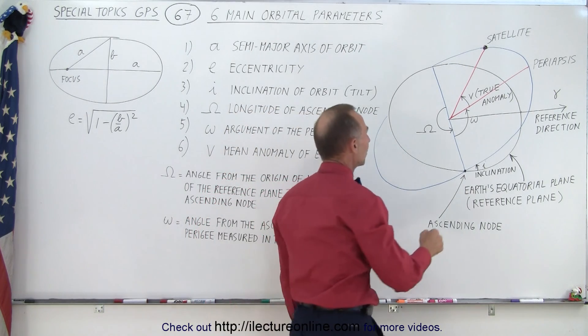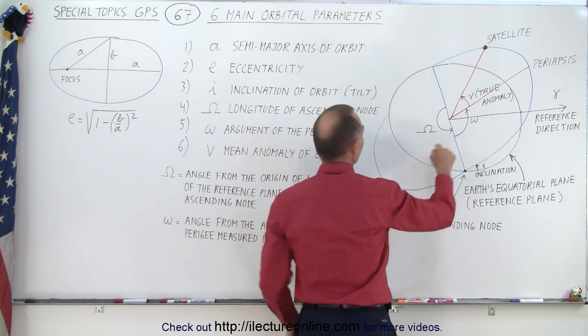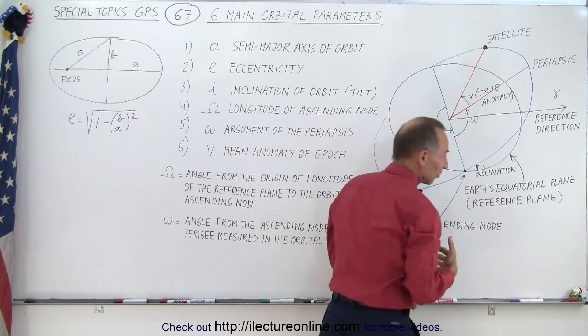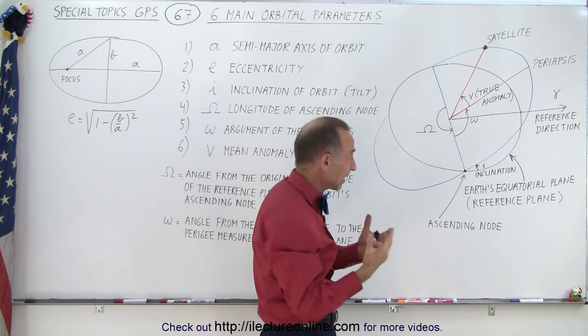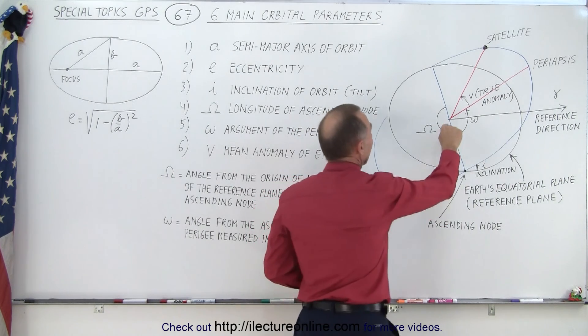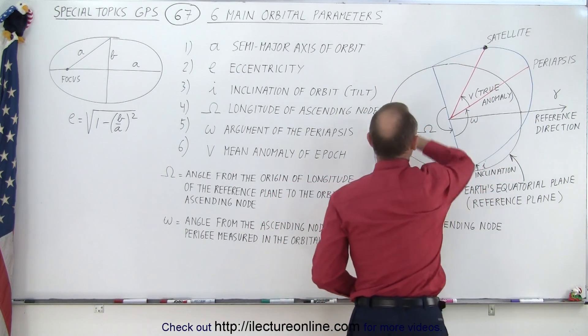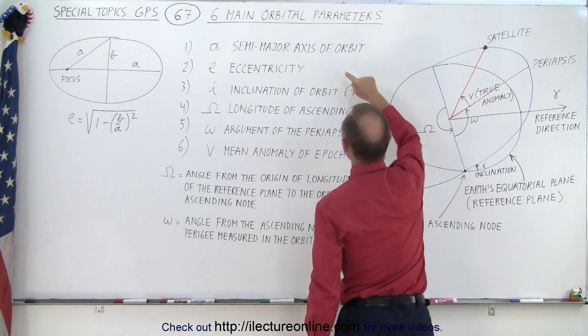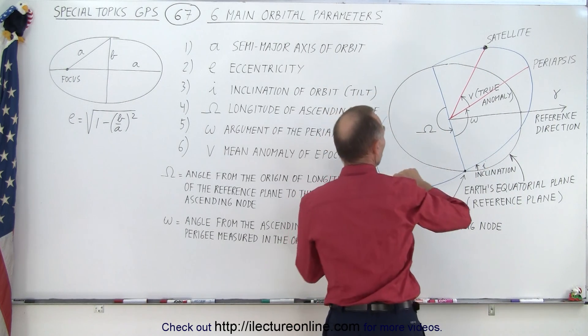So first of all we have what we call the distance from the center of the orbit, which is essentially the gravitational center of the Earth, out to the orbit of the satellite, and that would be what we call the semi-major axis of the orbit.